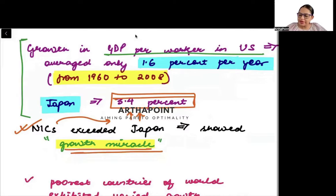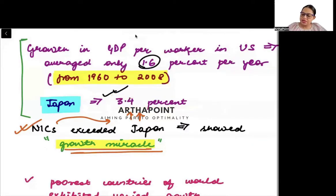The developed countries, like the country in US, were only growing at the rate of 1.6% per annum. But Japan was growing at the rate of 3.4%, whereas the newly industrialized countries were growing even faster than that.